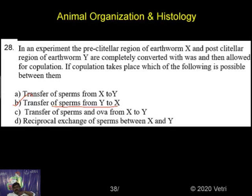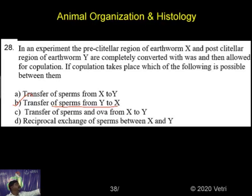Because they have the pre-clitellar and post-clitellar positions — pre and post — at the opposite ends of the clitellum. So the transfer of sperm from Y to X. These are the process, Option B is the correct transfer.